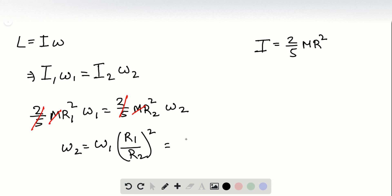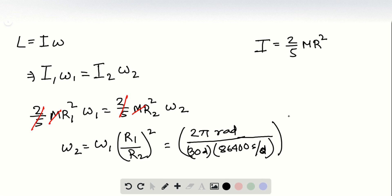Here omega 1 is given as one rotation per 30 days, so we convert that to radians. We'll have 2 pi radians divided by 30 days. We convert that to seconds—that's going to be 86,400 seconds per day—times r1 is 7 times 10 to the power 5 km and r2 is 16 km.